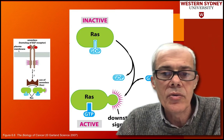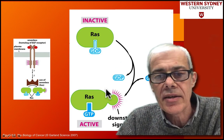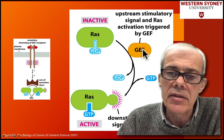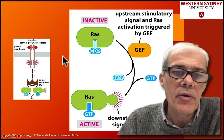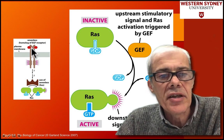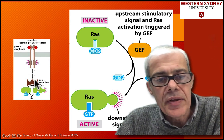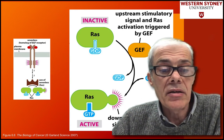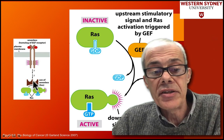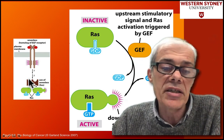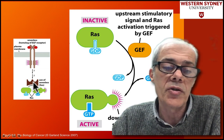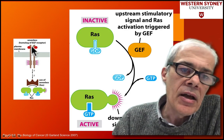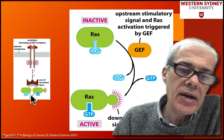The SOS gene — son of sevenless — was confirmed as a guanine exchange factor. The yeast geneticists also came in, having identified a protein similar to SOS, helping confirm its function. What they were now starting to uncover was the potential upstream signaling pathway: a growth factor picks up a signal, goes through a receptor, activates a guanine exchange factor (SOS), and that activates RAS.